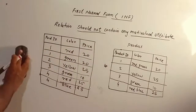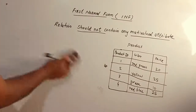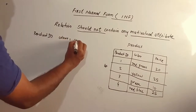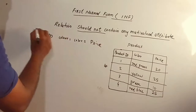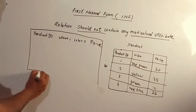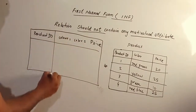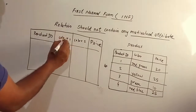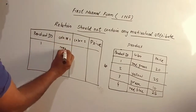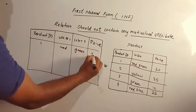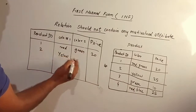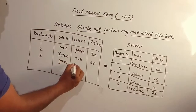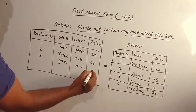We can also design the table with columns called Color 1 and Color 2. For example: product ID 1, Color 1 is red, Color 2 is green, price 22. Product ID 2, Color 1 is yellow — Color 2 is not applicable, price 25. Product ID 3, Color 1 is green — Color 2 is not applicable.